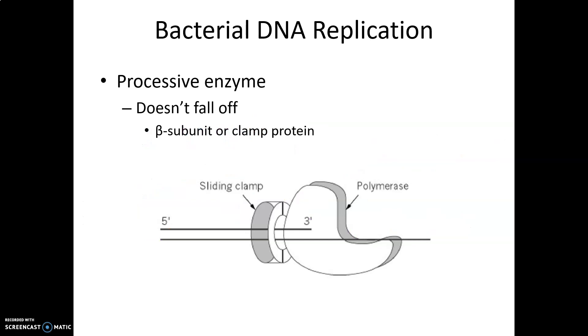DNA polymerase is a processive enzyme—it doesn't fall off. It doesn't add a nucleotide, fall off, come back on, add a nucleotide, fall off. It has 10 subunits: alpha does the actual attaching of nucleotides, and beta is this clamp protein holding it on, keeping it there, allowing it to slide along the DNA.